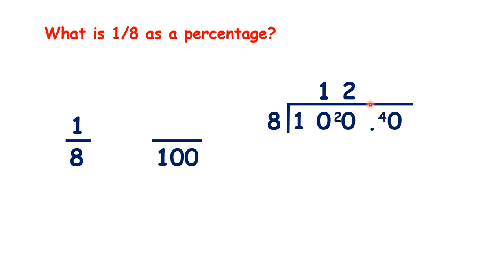Now we need to remember to write the decimal point in our answer, and 40 divided by 8 is 5. So 8 times 12.5 is 100.